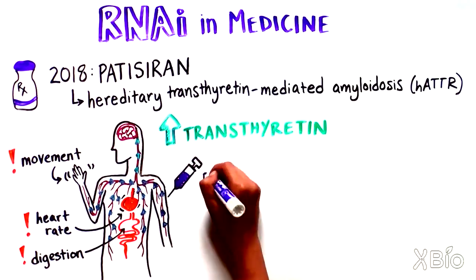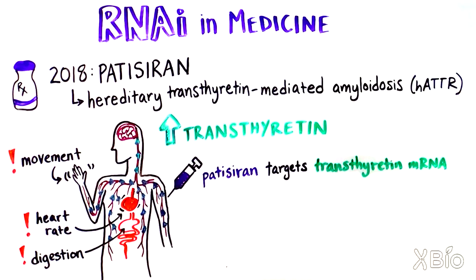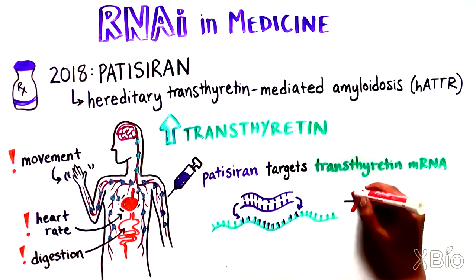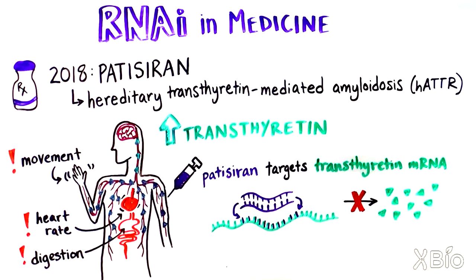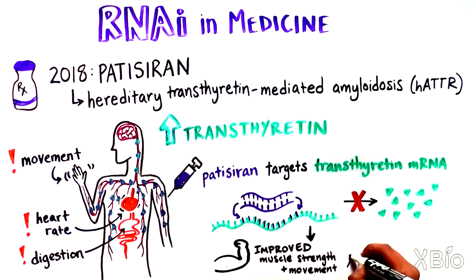Patissiran directly targets the RNA responsible for making transthyretin, thereby limiting accumulation of the disease-causing protein. Patients who received patissiran in a clinical trial had significantly improved muscle strength and movement compared to people receiving a placebo.